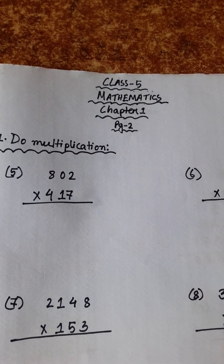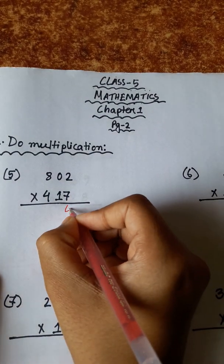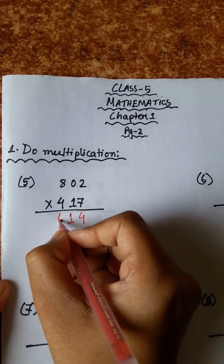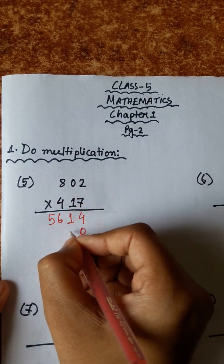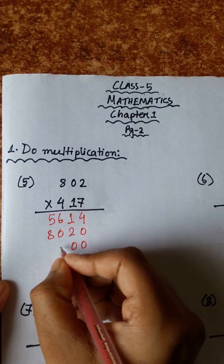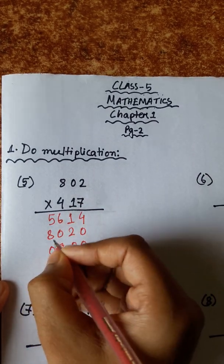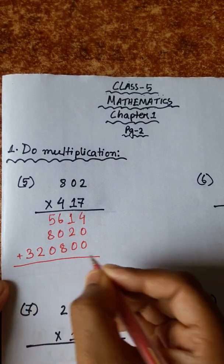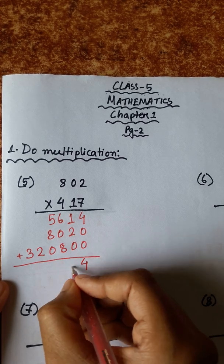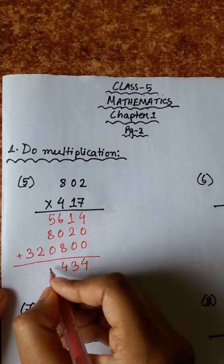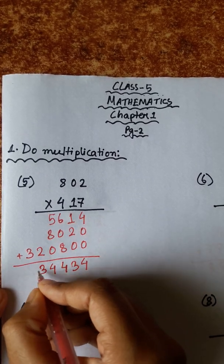Number 5: 8802 multiplied by 417. 7 twos are 14, carry 1. 7 zeros are zero, plus 1 is 1. 7 eights are 56. 2 ones are 2. One zero is zero. 8 ones are 8. 4 twos are 8. 4 zeros are zero. 4 eights are 32, carry 4. 8 plus 6 is 14, carry 1. 8 plus 1 is 9, plus 5 is 14, carry 1. 2 plus 1 is 3.